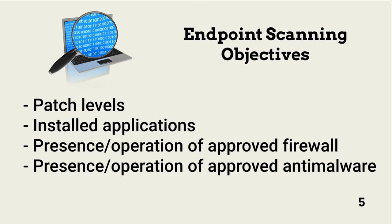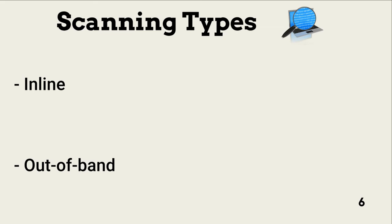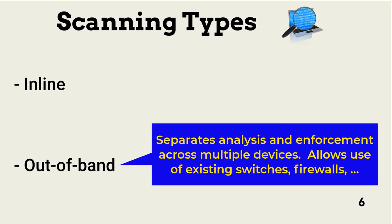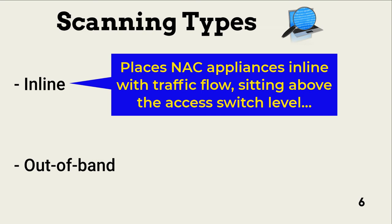A second way to scan endpoints is via a browser application. Browser applications do not require installation and management of agents. NAC appliances can be placed in-line or out-of-band. Out-of-band devices separate analysis and enforcement across multiple appliances managed by a centralized console. This approach allows an organization to use already installed network devices, like switches and firewalls, to enforce policies.